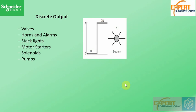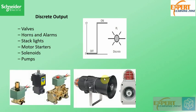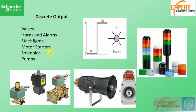Discrete outputs operate in a similar way as discrete inputs. Some examples of devices with discrete outputs include valves, alarms, indicator lights, motor starters, solenoids, and pumps. These devices are on when they are active and they are off when they are not active.